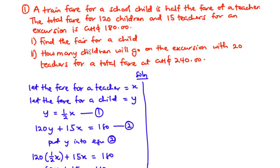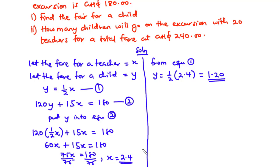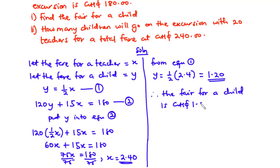Since we are interested in the fare for a child, we insert x = 2.4 into equation one. From equation one, y equals half times x, so y equals half of 2.4, which equals 1.2. Therefore, the fare for a child is 1.20 Ghana cedis. That completes part (i).